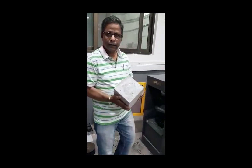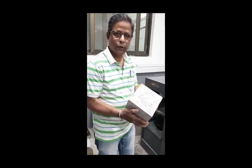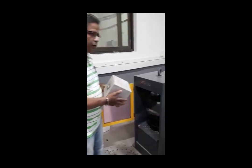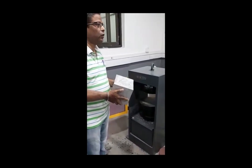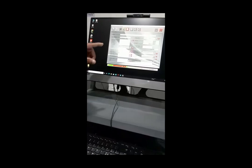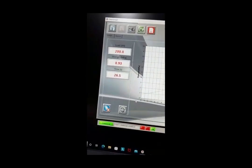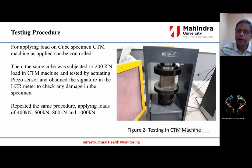This cube has already been tested at the baseline. After the baseline, I am now going to test at 200 kN load. This is the compressive strength testing machine (CTM), and in the CTM machine I am measuring at 200 kN load increments. We are setting the 200 kN load; when the CTM machine applies load it can be controlled. The same cube was then subjected to 200 kN load in the CTM machine and tested by actuating the piezo sensor, obtaining signatures in the LCR meter to check for any damage. The same procedure was repeated applying loads of 400 kN, 600 kN, 800 kN, and 1000 kN.